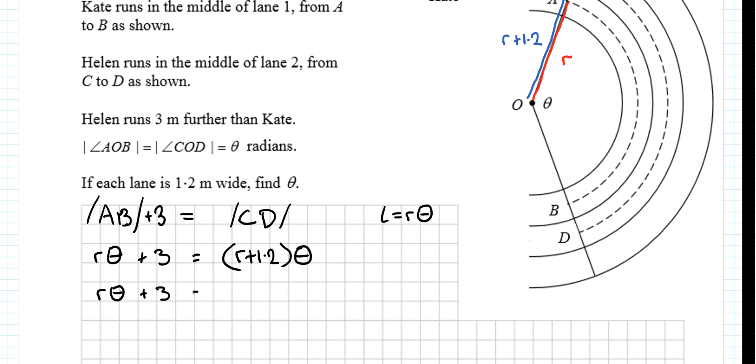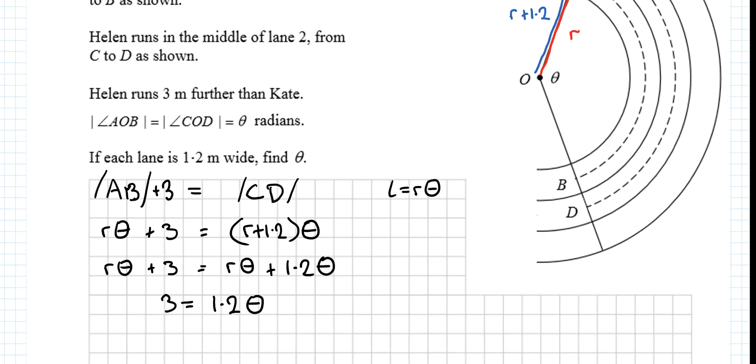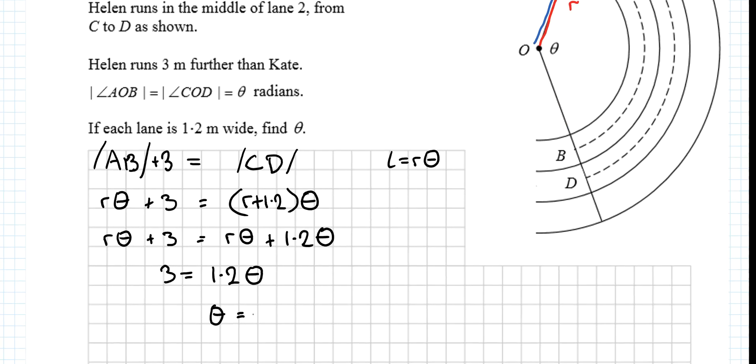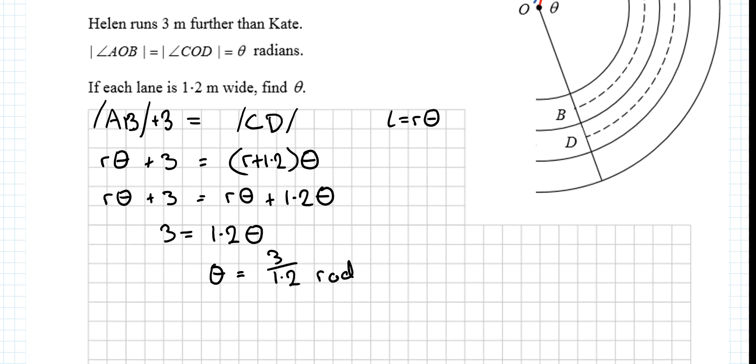OR theta plus 3 equals OR theta plus 1.2 theta. 3 equals 1.2 theta by subtracting OR theta from both sides. Divide by 1.2. And it's in radians. Now you can put that into your calculator and see what you get out. And you get theta equals 2.5 radians for 10 marks.